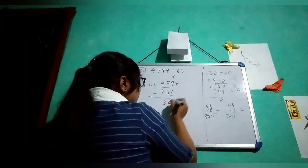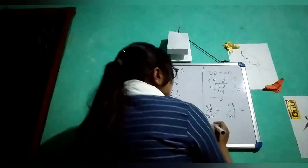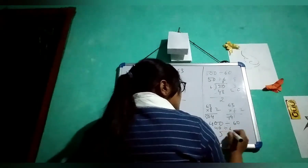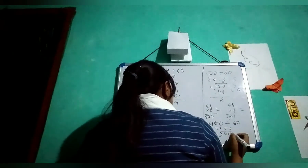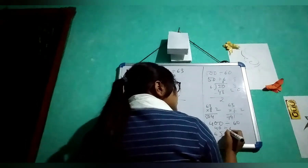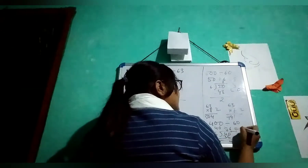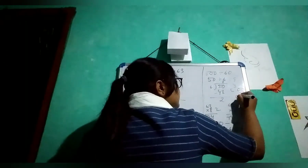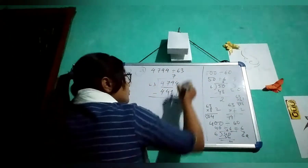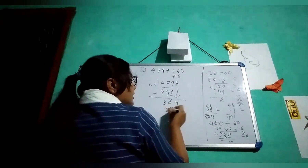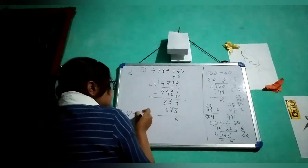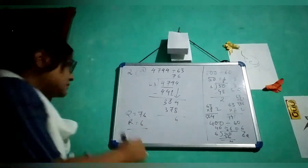Bring down that 4, giving 384. If you do rounding off, it will be 400, and this one will be 60. So 40 divided by 6. 6 you can take — 36 minus 4. So 6 will be the estimated quotient. Multiply with 6: 3 times 6 is 18, 6 times 6 is 36, 37, 378. If you do minus, it will be 6. So the quotient is 76 and the remainder is 6. This is the answer for number 2A.